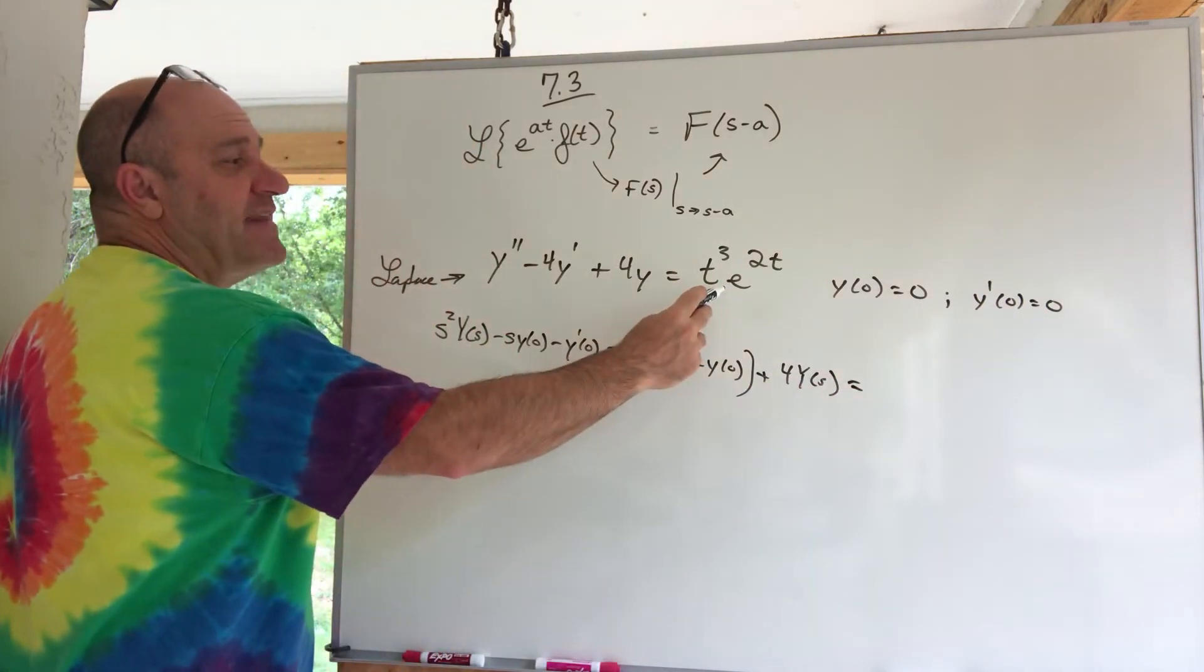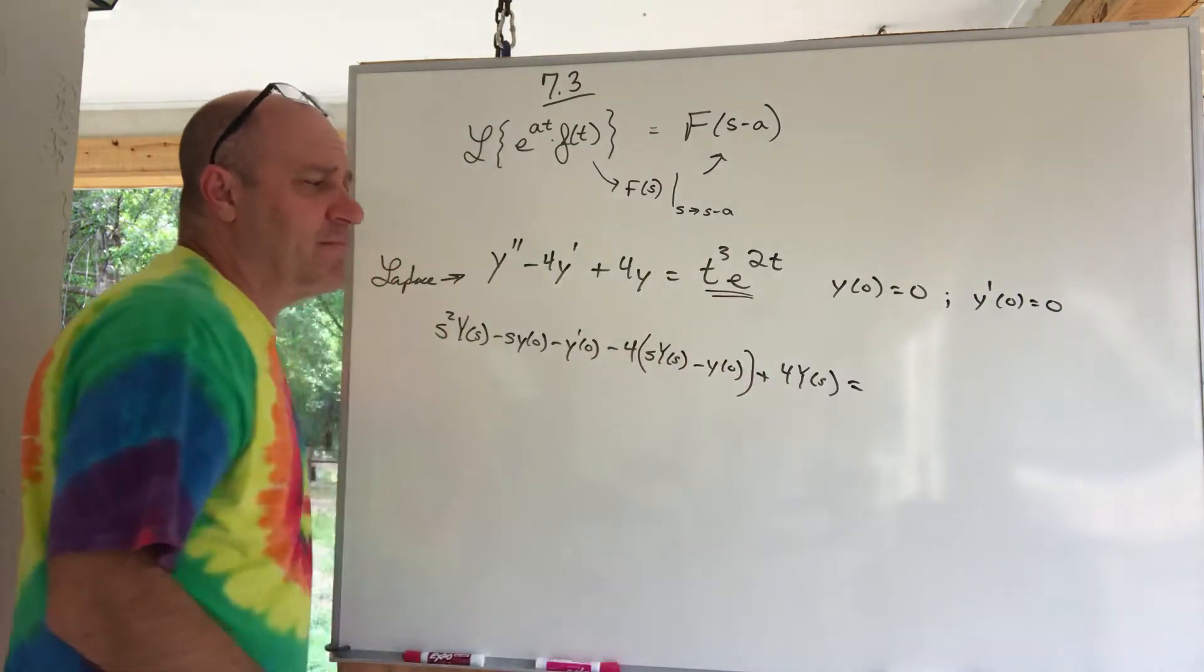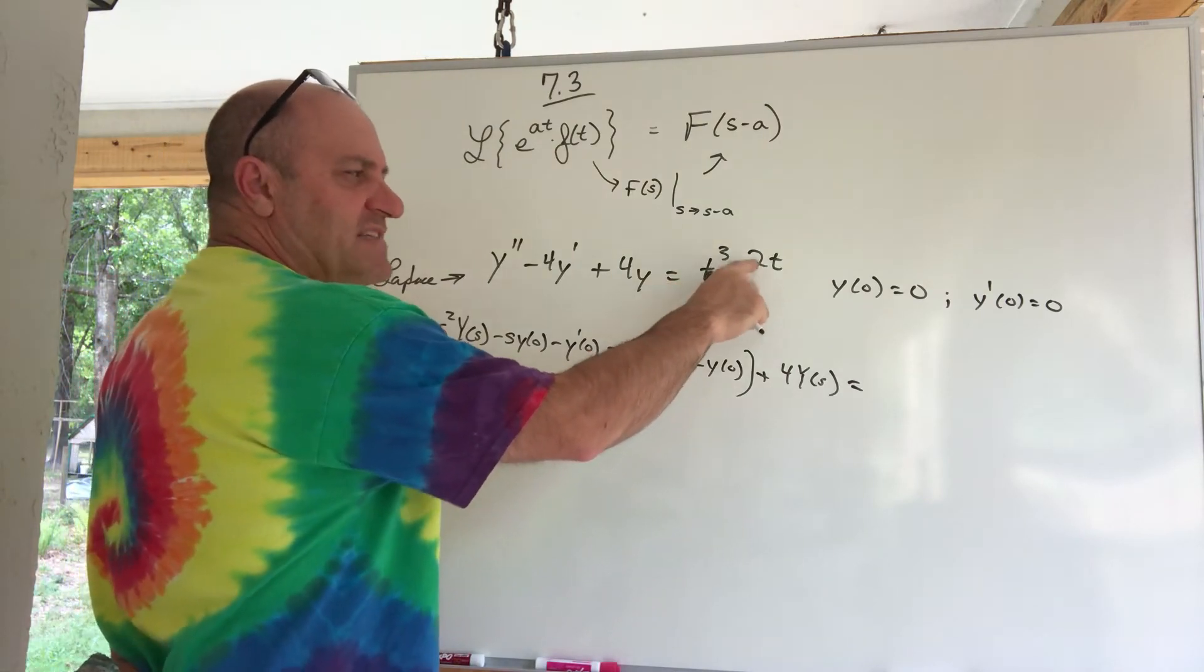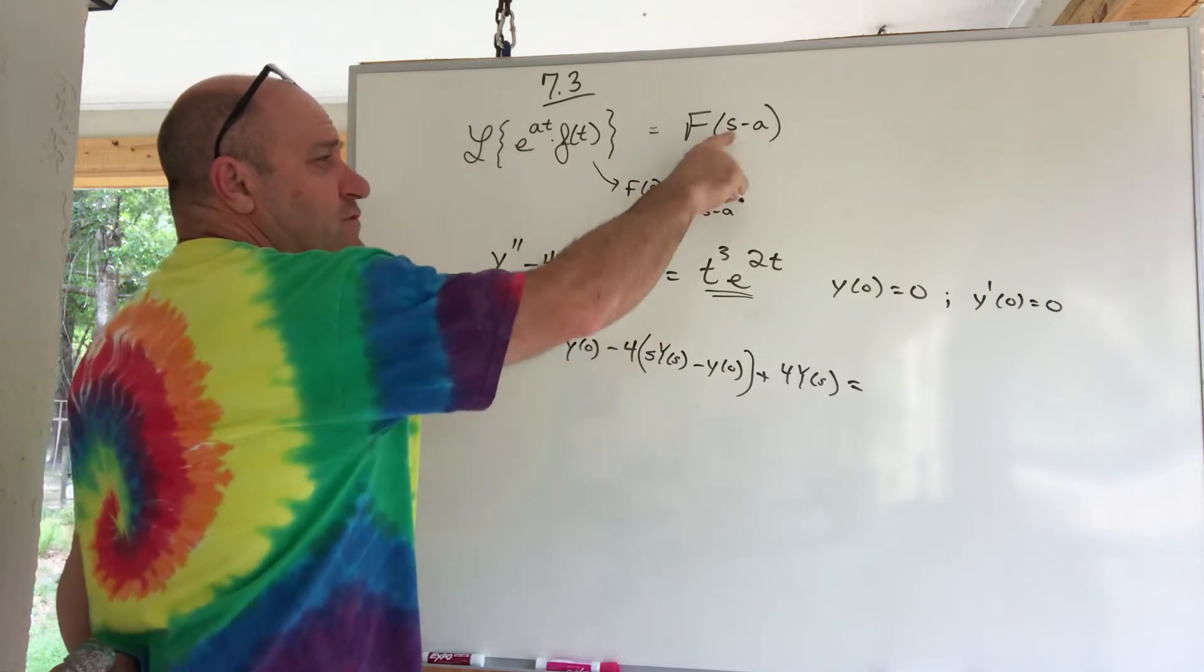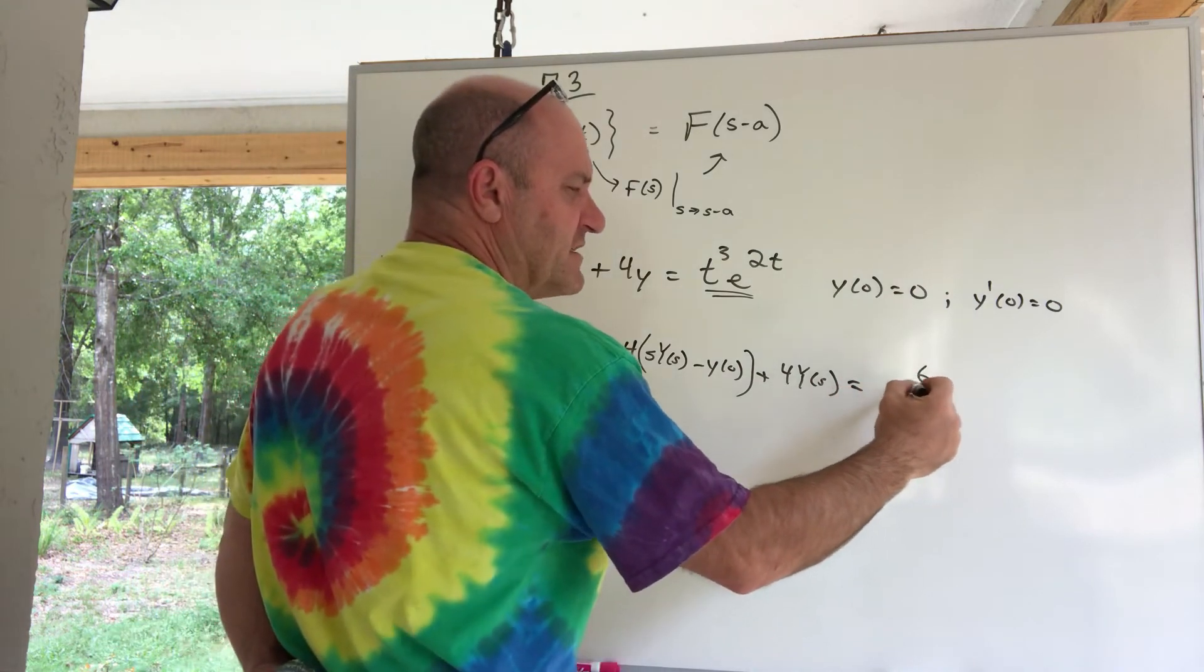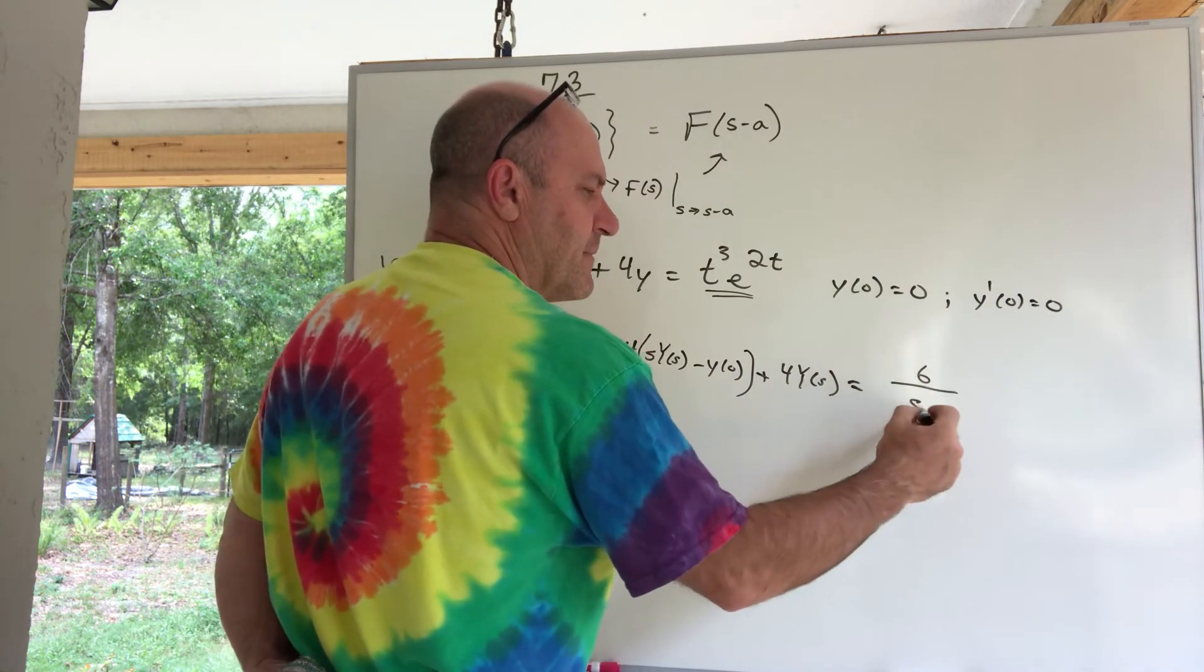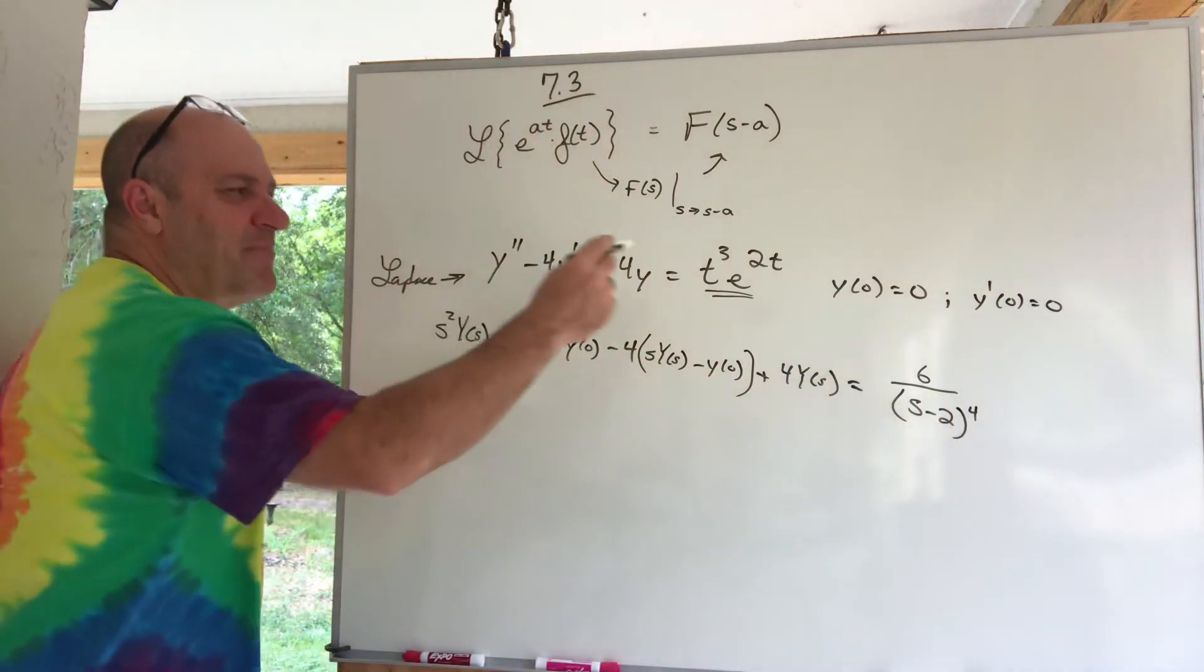When I do the Laplace of a 4y, that's just a 4 big Y of s. When I do the Laplace of the other side, that is this rule here. Or I could look him up. He's number 17, I think I said a few minutes ago. What he is, is he's the Laplace of t cubed with an s minus 2 replacing all the s's. With an s minus 2 replacing, let's see, what is the Laplace of t cubed? 3 factorial 6, 3 factorial or 6 over s to the 4th. Oh, I'm sorry, s minus 2 to the 4th.